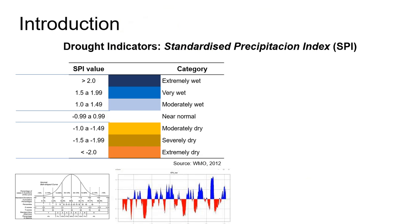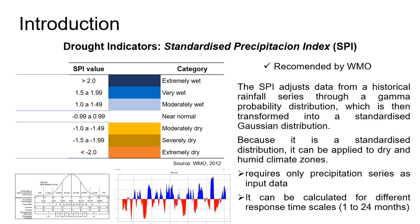The Standardized Precipitation Index, SPI, is a globally used drought index recommended by the World Meteorological Organization. The SPI adjusts data from a historical rainfall series through a gamma probability distribution, which is then transformed into a standardized Gaussian distribution. Because it is a standardized distribution, it can be applied to dry and humid climate zones.